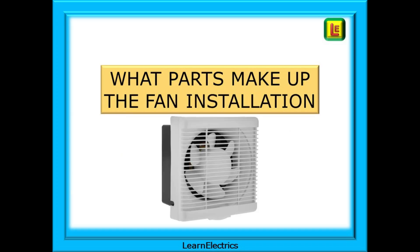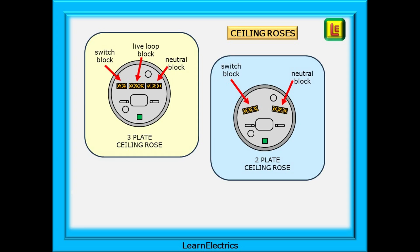To begin with we can look at the components that make up the electrical part of the installation. You will come across two popular types of ceiling rose. Most current ceiling roses are the three plate type with a switch block, a live loop block and a neutral block. Older installations may have two plate ceiling roses with just two blocks or even junction boxes can be used.